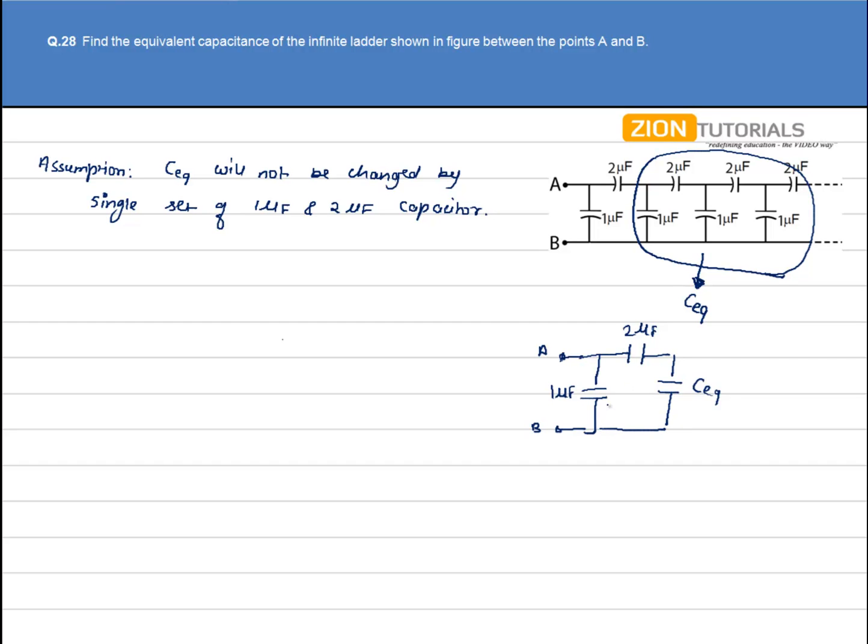Now of course the resultant of this circuit will also be equal to C equivalent. So what we'll do is calculate the equivalent of this complete circuit and equate it to C equivalent.